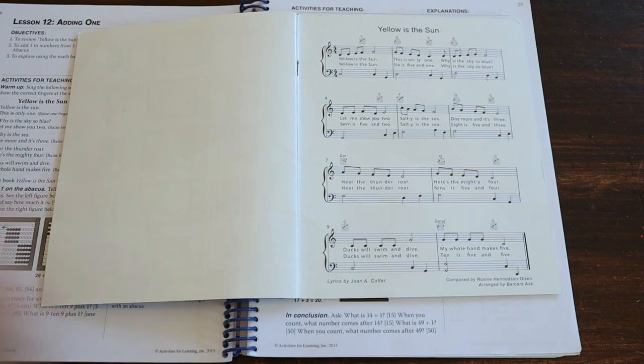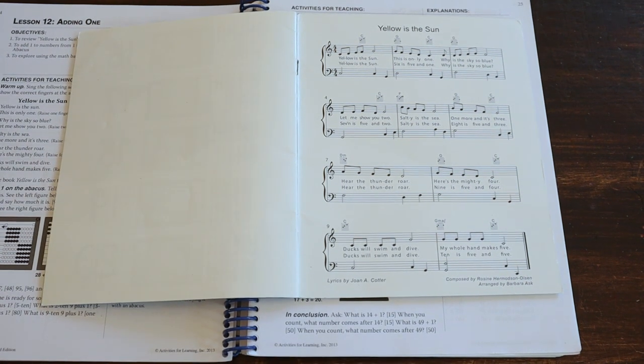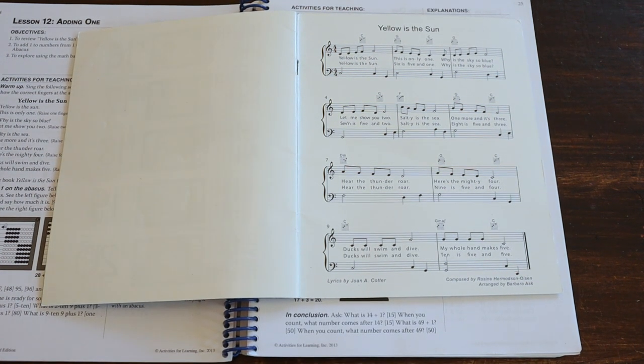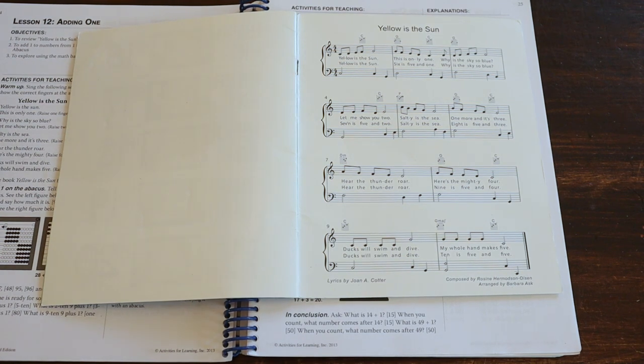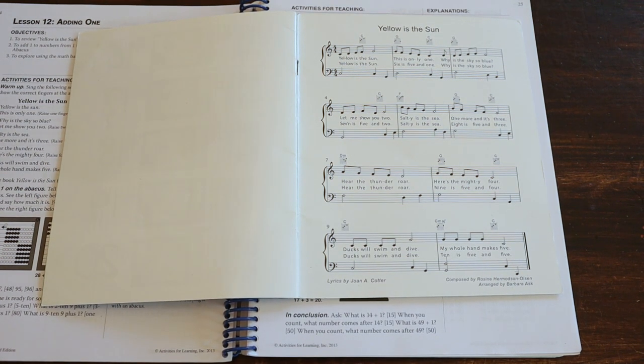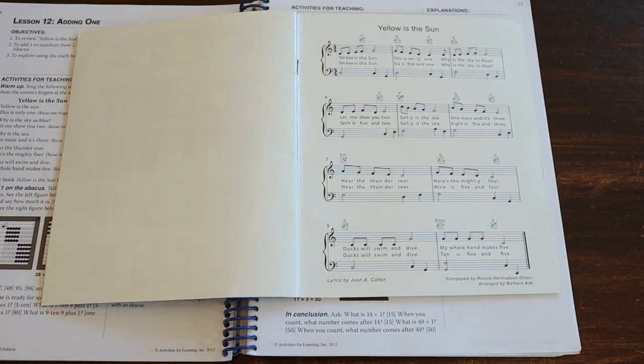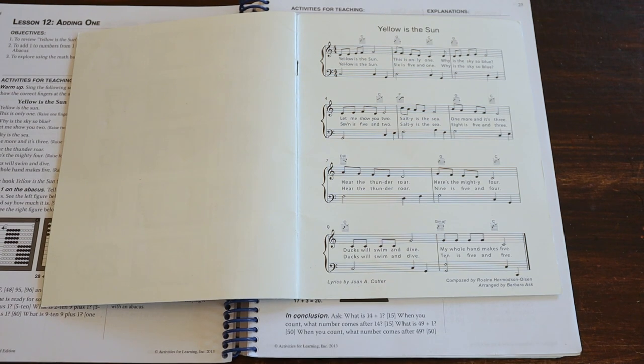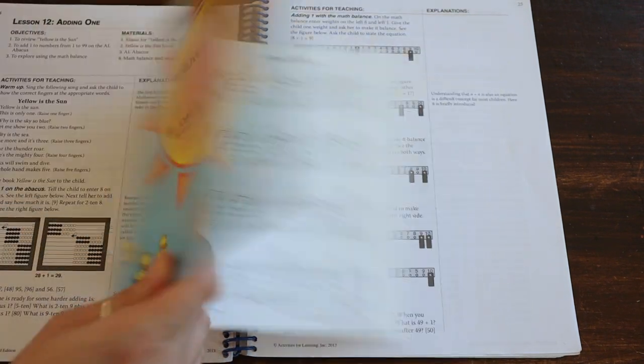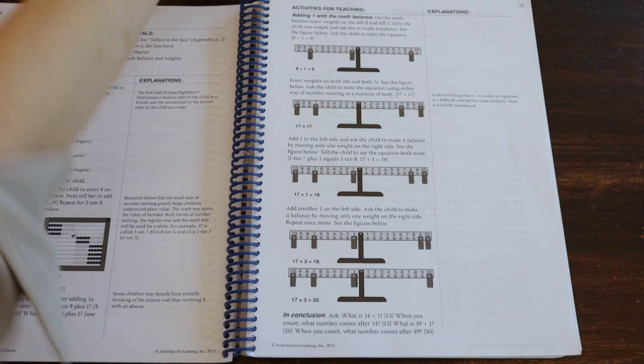Here is the music for yellow is the sun. I actually don't know how yellow the sun works, like how it sounds. I've never actually listened to it, but if you don't want to just sing it on your own, you can play it on the piano. They've also got guitar chords. They also have an audio version that you can download online if you want to do it that way. So there's the book.